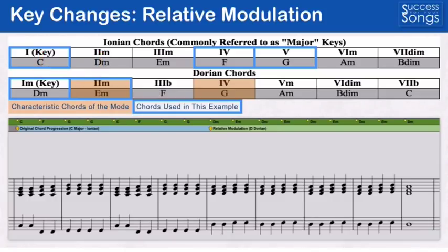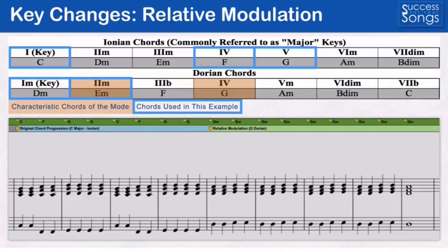I'm showing two charts here on the screen. One shows the Ionian chords in the key of C. The other shows the Dorian chords in the key of D. And if you look at them you'll see that those chords are exactly the same — they're just in a different order. In C Ionian the D minor is the two chord, while in D Dorian the D minor is the one chord.